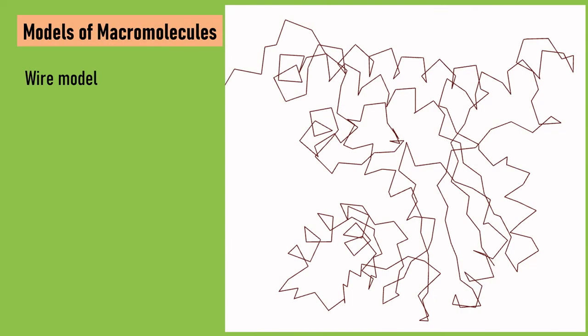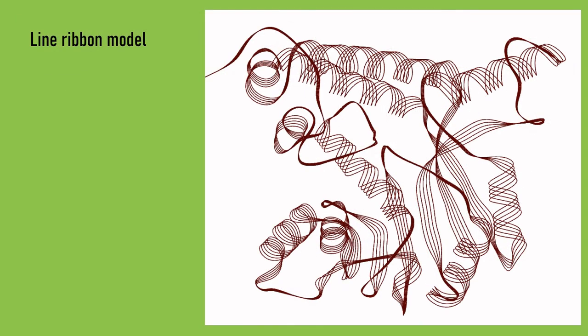This is the first model. It is known as wire model in which the protein backbone is in the form of a wire. The next one is the line ribbon model. In this we can differentiate between the different secondary structures of the protein, that is helices, sheets, and loops.